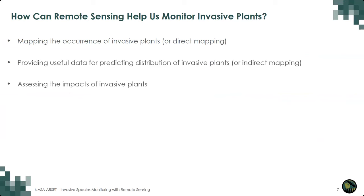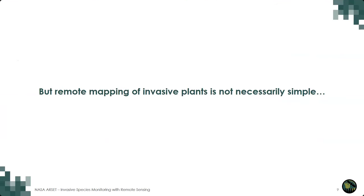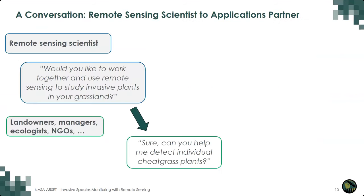Each of these tasks could be discussed for hours, but for today's talk I'm going to focus on the first task: mapping the presence of invasive plants. Although remote sensing has a lot of potential, it is not necessarily simple or straightforward. A common expectation is that remote sensing can detect and map every individual species, but that is rarely the case — especially in ecosystems like grasslands where we are dealing with really small plants. Detecting and identifying individual plants is difficult, if not impossible.